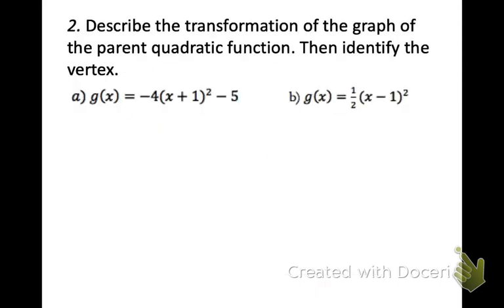Now look at number two. This is where you're describing the transformation of these equations from the parent functions. Hopefully what you did is you looked at the a, h, and the k value. So in number two, and I've written this so you can just remember where they're located, our a value is negative four, our h is negative one, and our k is negative five.